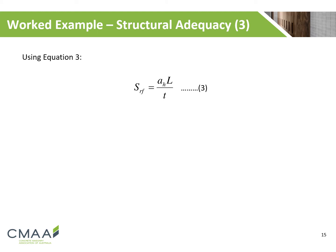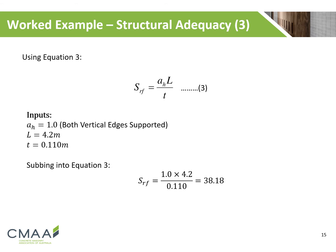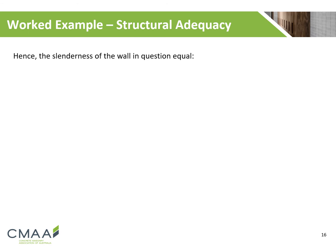Finally, we evaluate equation 3. We can now determine the slenderness ratio of the wall by selecting the minimum from the three values determined beforehand — these being 23.86, 21.13 and 38.18. The slenderness ratio of the wall is 21.13.